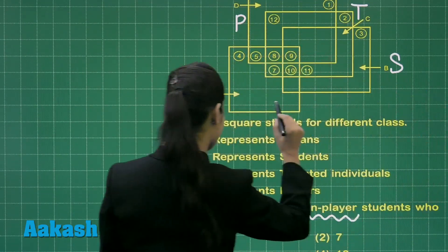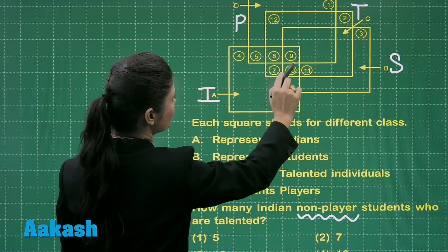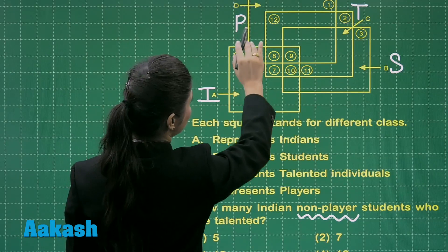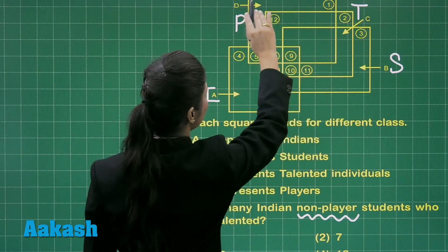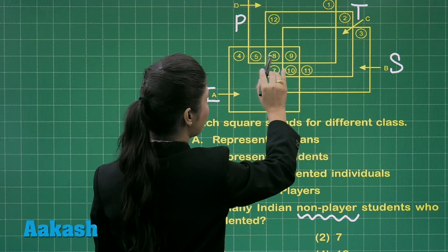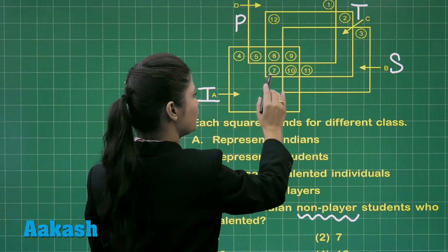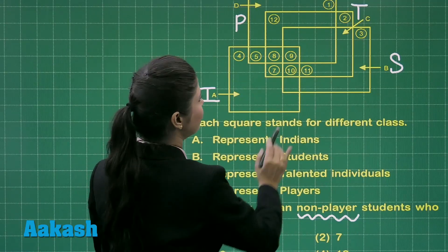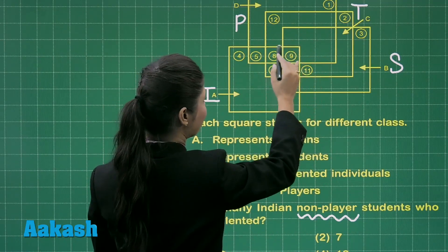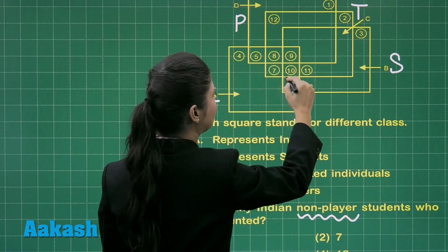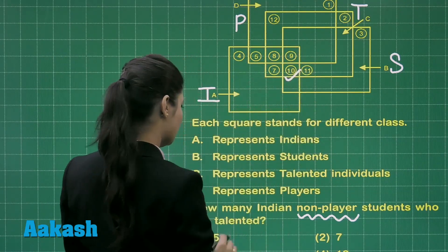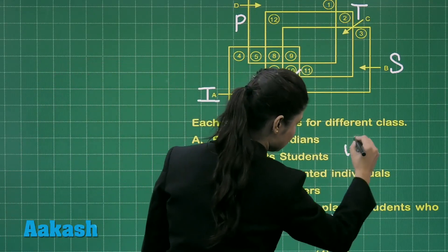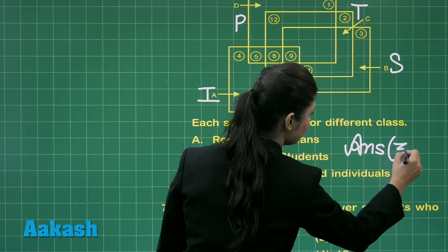Consider the diagram and see all the numbers included in Indians. Next, we have to exclude the part representing players, so 5, 8, and 9 will be excluded. The remaining values are 7 and 10. Next, you have to consider who are talented, and the region belonging to the talented students is only 10. Therefore, the answer for question 7 is option number 3.